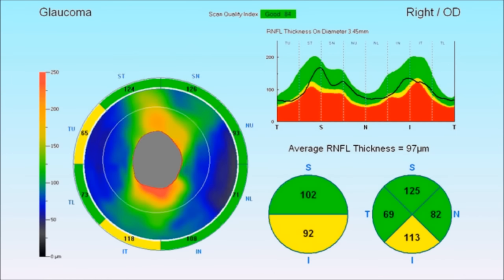In glaucoma the transparent nerve fibers that take the visual signal to the brain atrophy away. The OCT scan can visualize the thickness of this transparent nerve fiber layer and so atrophy can be detected early.